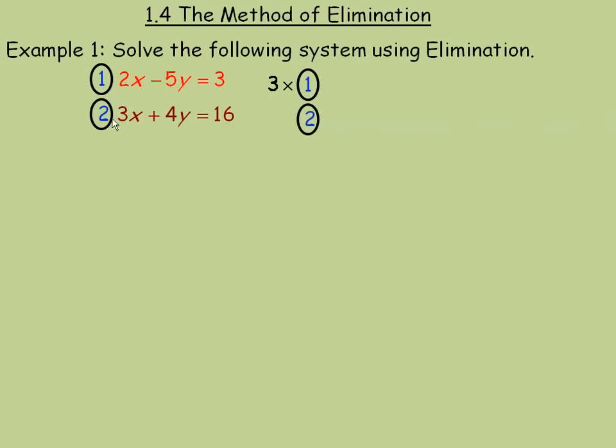So I'm going to multiply the whole first equation by 3. The second equation, in order to make this a 6x, remember again 6 is the least common multiple of 2 and 3, I would need to multiply this by 2, so I'll multiply the second equation by 2.